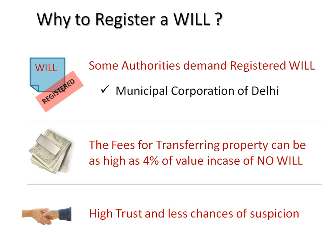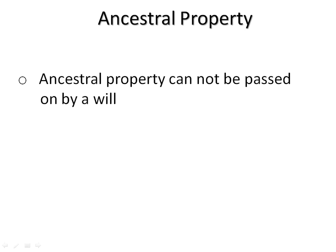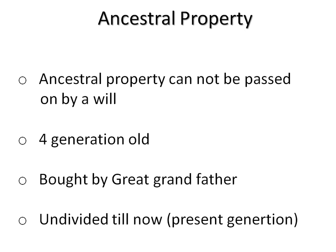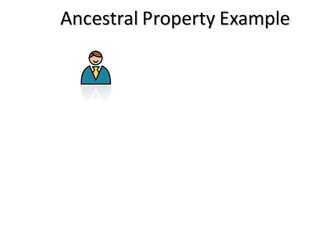Now let's understand an important concept called ancestral property. Ancestral property cannot be passed on by a will. Ancestral property is a multigenerational, undivided property — for example, one bought by your great-grandfather that has not been divided till now. The important point is that if you have acquired such property, you cannot simply state in a will that it should go to just one or two persons — every legal heir will have a right to that property.